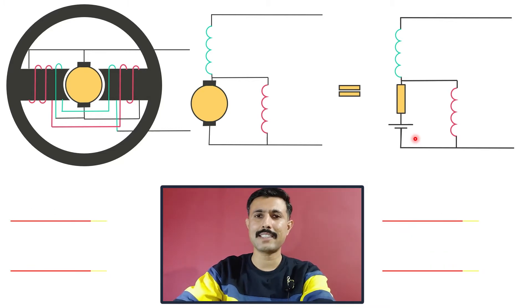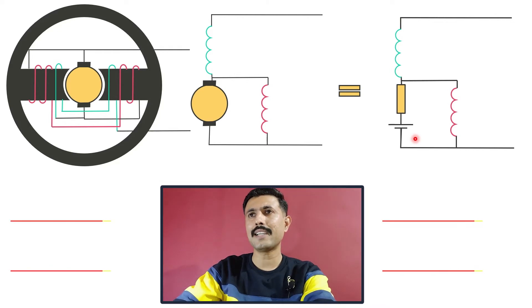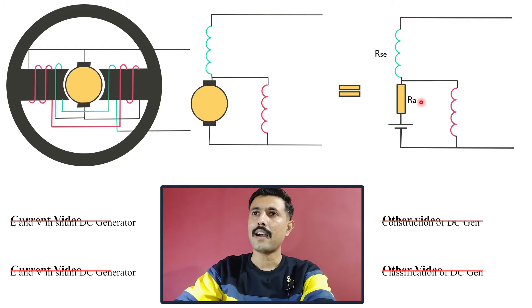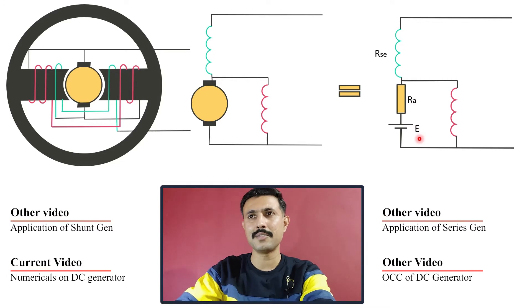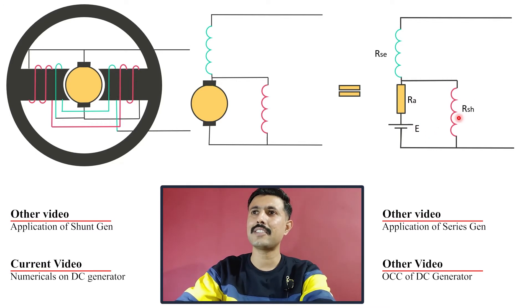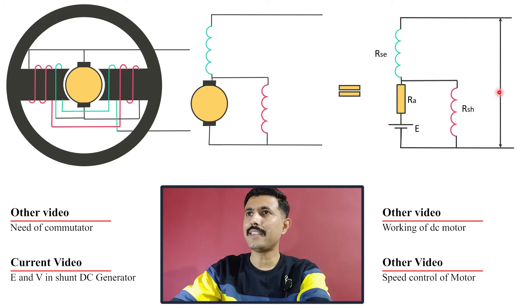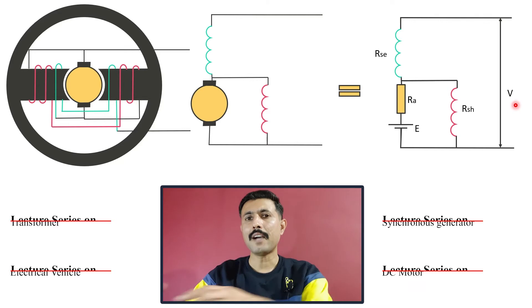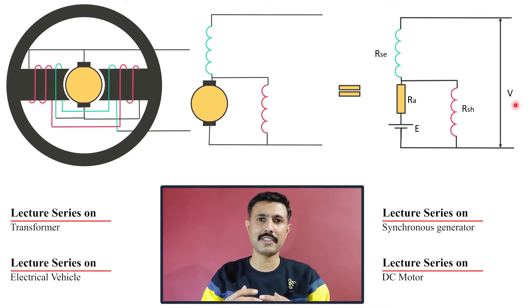Let's look at the electrical parameters in the short shunt DC generator. RSE represents the resistance of the series field winding, RA is the resistance of the armature winding, E is the induced EMF, and RSH is the resistance of the shunt field winding. Between the two output terminals we have the terminal voltage V. Our aim is to establish the relation between terminal voltage V and induced EMF E.